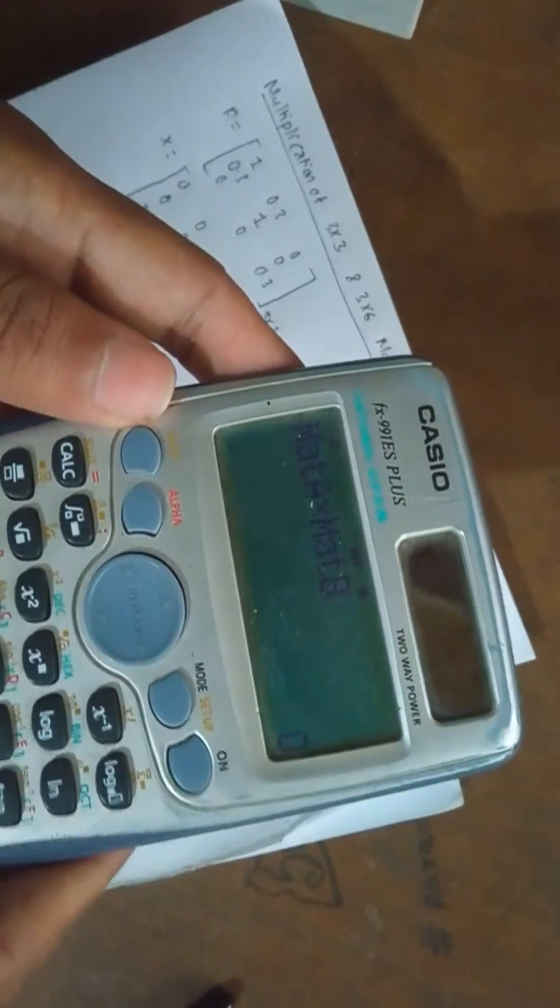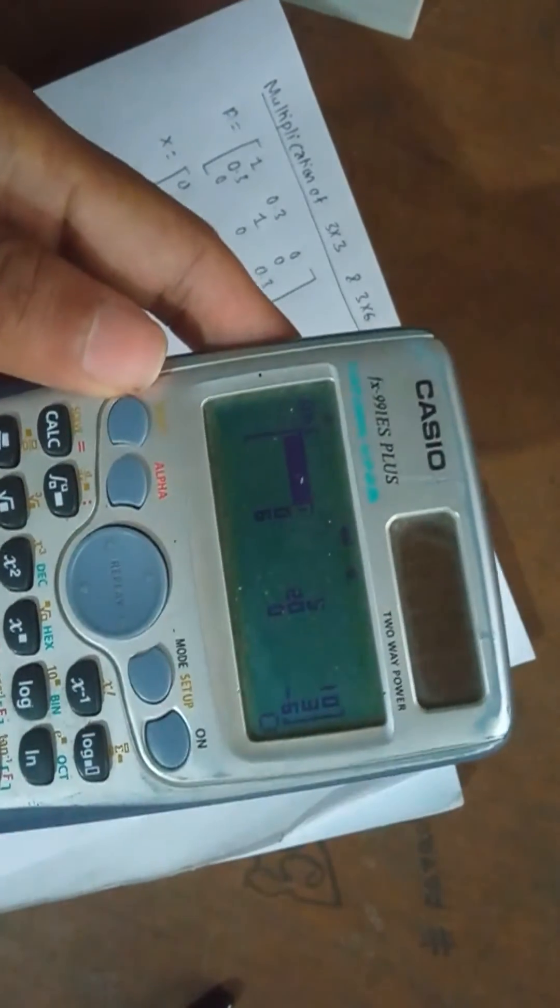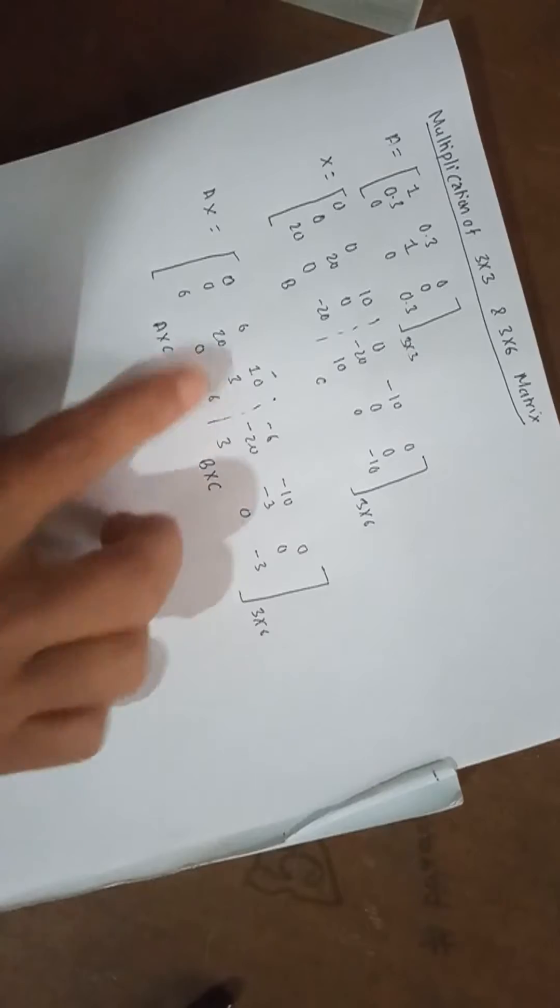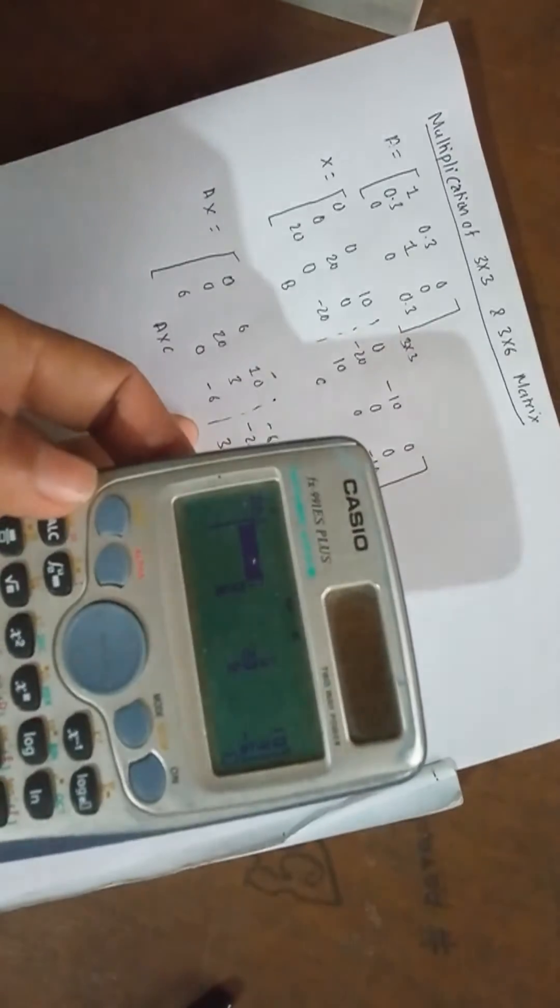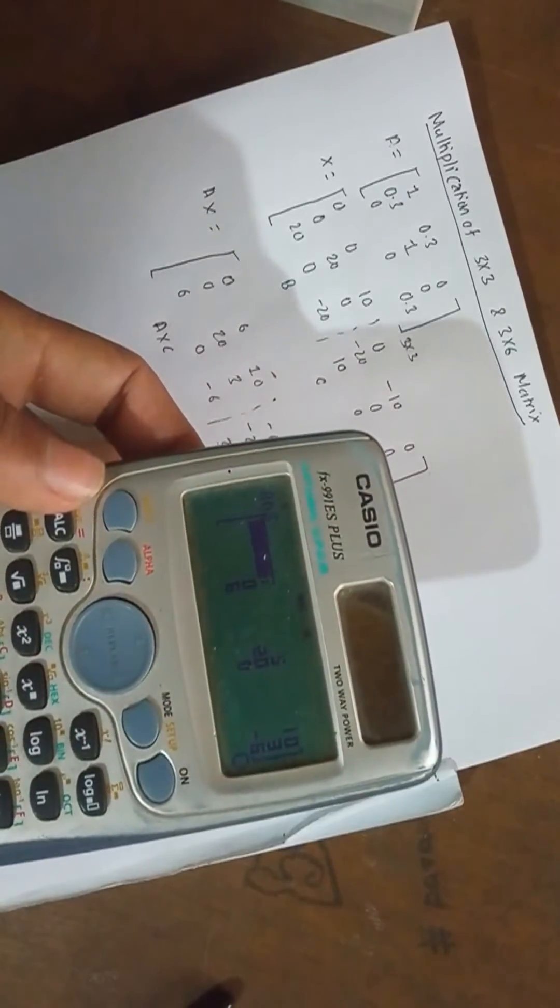This is the result: 0, 16, 0, 6, 10, 0, 20, 3, 6, 0, minus 6.